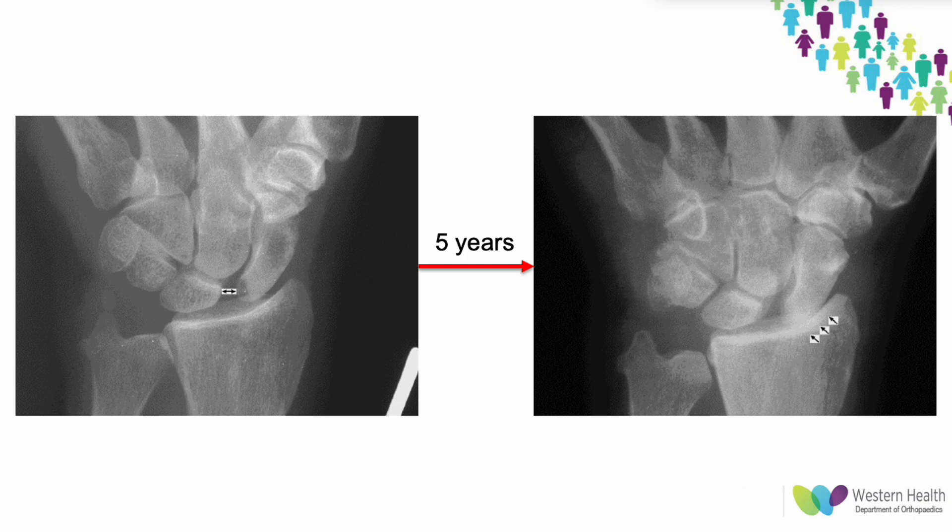This image shows the natural history of a scapholunate interosseous ligament injury with static instability over five years. The image on the right shows significant radioscaphoid arthritic change.